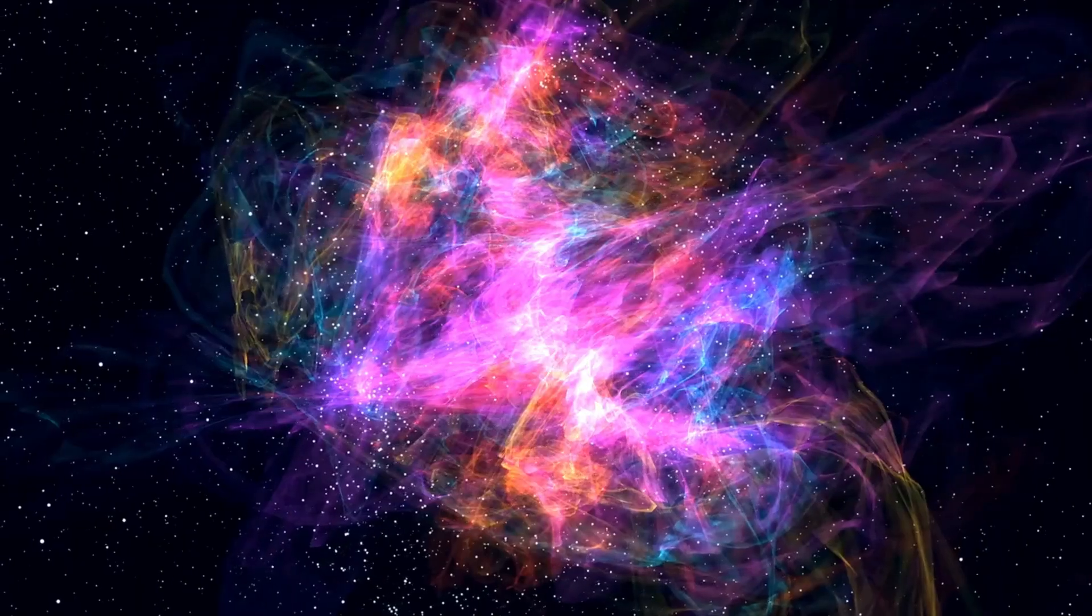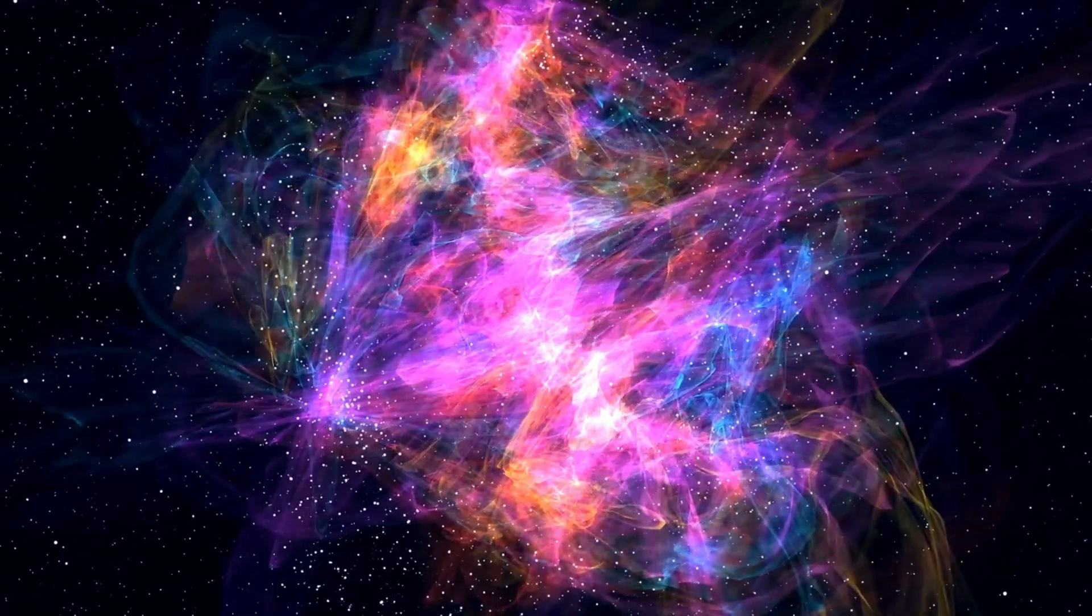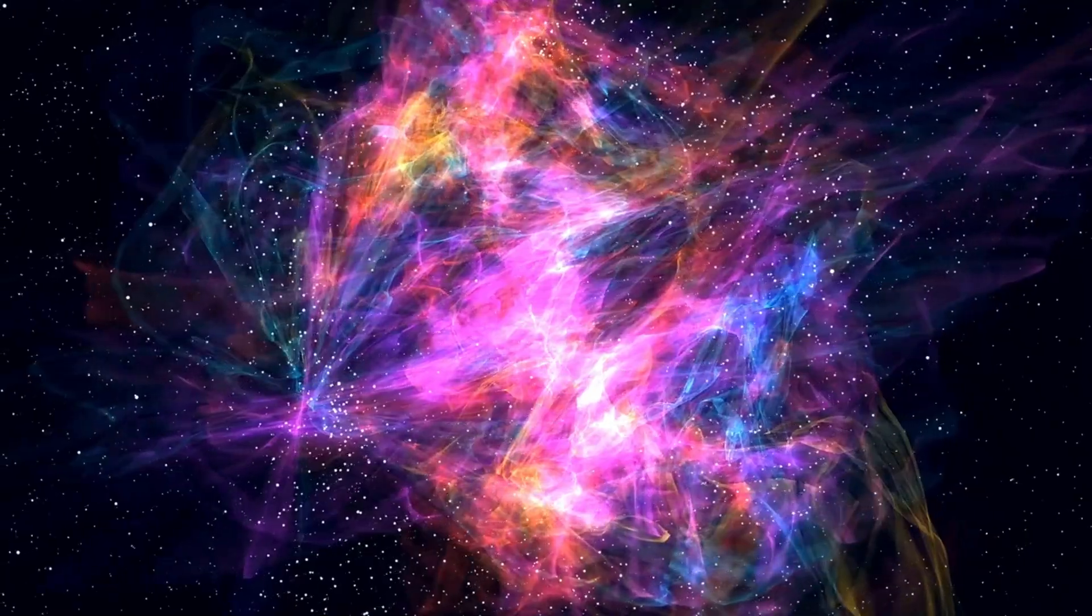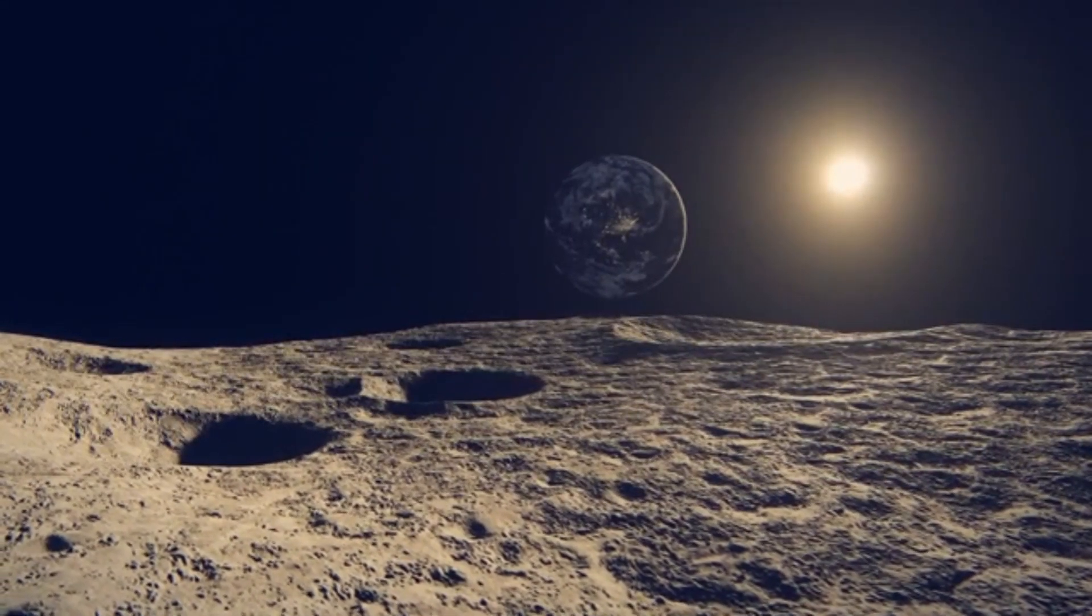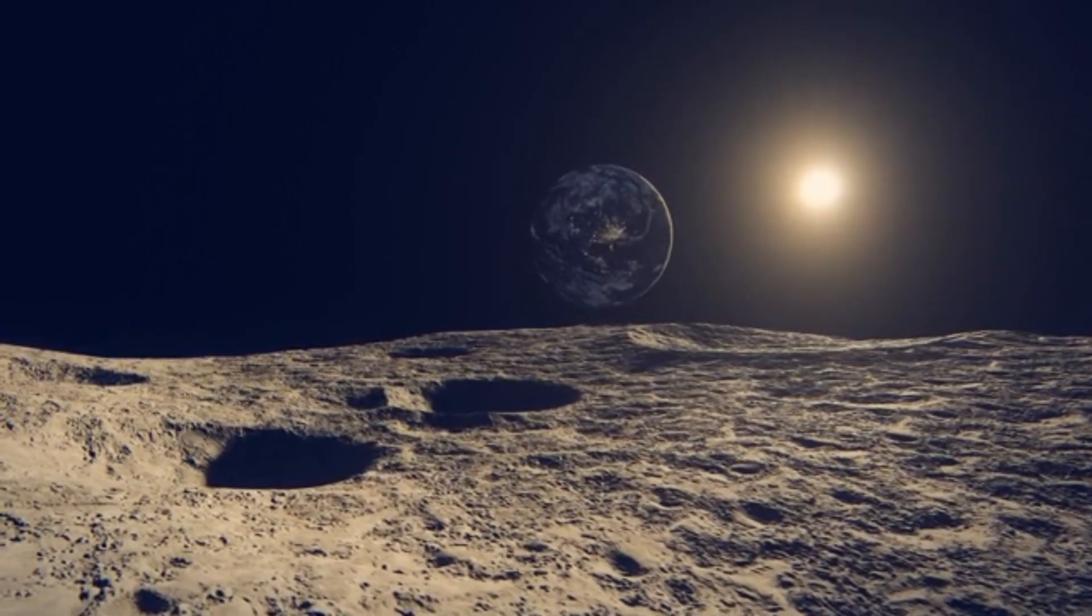Its surface is covered with nitrogen ice, and its atmosphere consists mainly of nitrogen, methane, and carbon monoxide. In contrast, Neptune, a massive gas planet, is made primarily of hydrogen, helium, and other lighter elements.